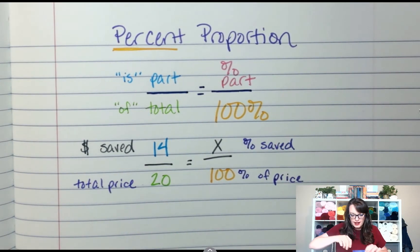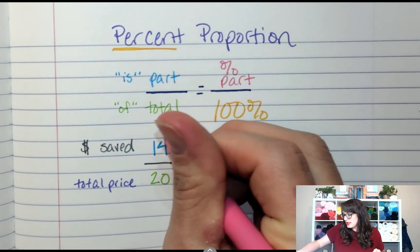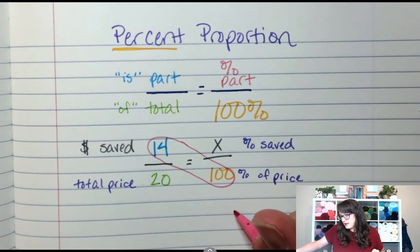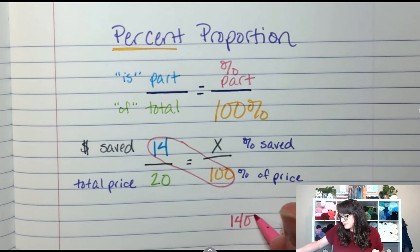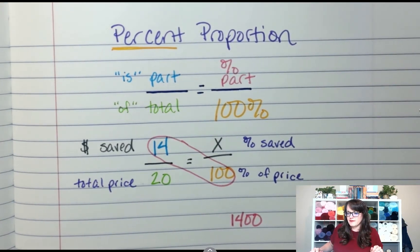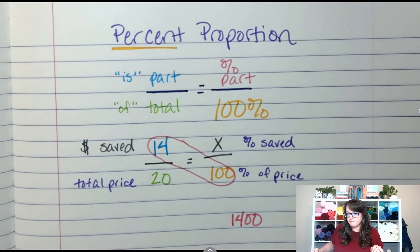Now I cross multiply and divide. What two numbers am I going to cross multiply? 14 times 100. So 14 times 100 is 1,400.